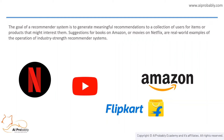The goal of a recommender system is to basically generate meaningful recommendations to a collection of users for items or products that might interest them. We can have single inputs like music or books, or can have multiple inputs like clothes, groceries, movies, and so on. Recommender systems can be classified as collaborative and content-based filtering. In content-based filtering, the system utilizes a series of items to recommend additional items with similar properties. In collaborative filtering, the system analyzes the user's history of choices, compares it to other users, and gives suggestions for what the user might like.